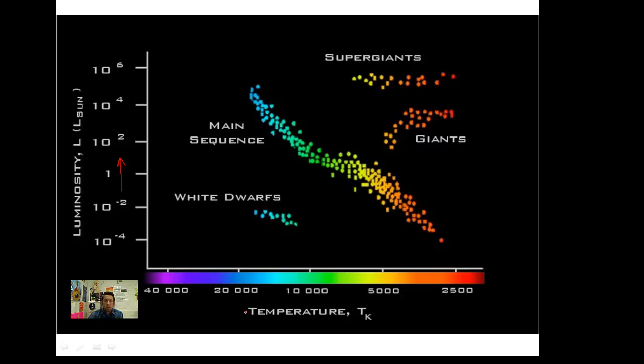Temperature is opposite though. Temperature is increasing as you move toward the origin. Notice 40,000 Kelvin down here, 2,500 here. So the blue, the lavender stars are much, much hotter than the orange, yellow, red stars that we're talking about down at this realm.